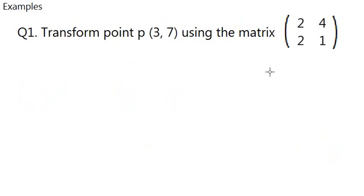So let's resume to examples after I apologized for my mistake. Transform points P, 3, 7 using the matrix 2, 4, 2, 1. Do you remember when I talked through a factor in chapter 9.1, I said that a 2 by 1 matrix can represent a coordinate.